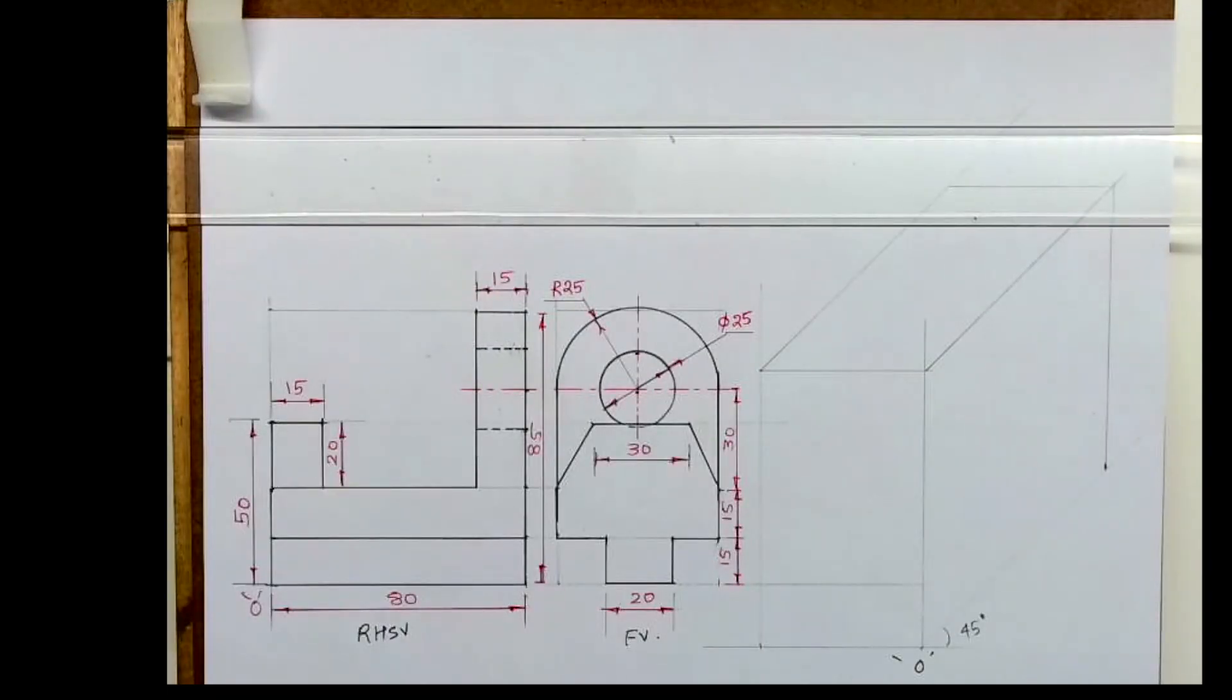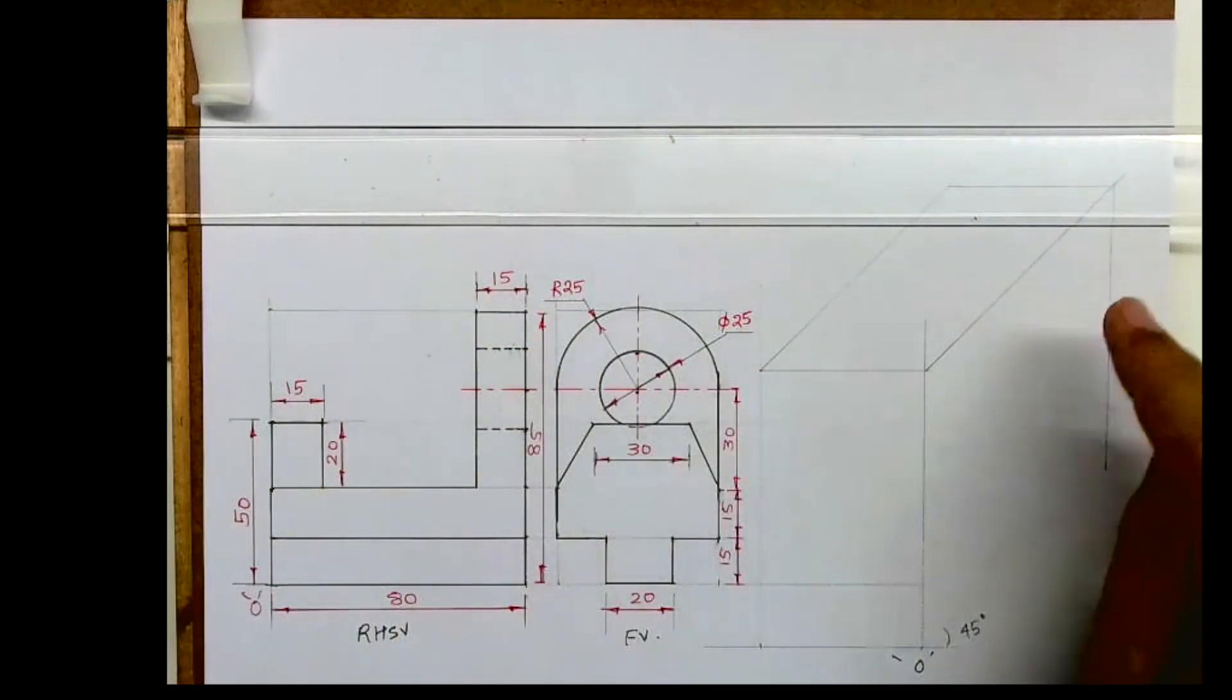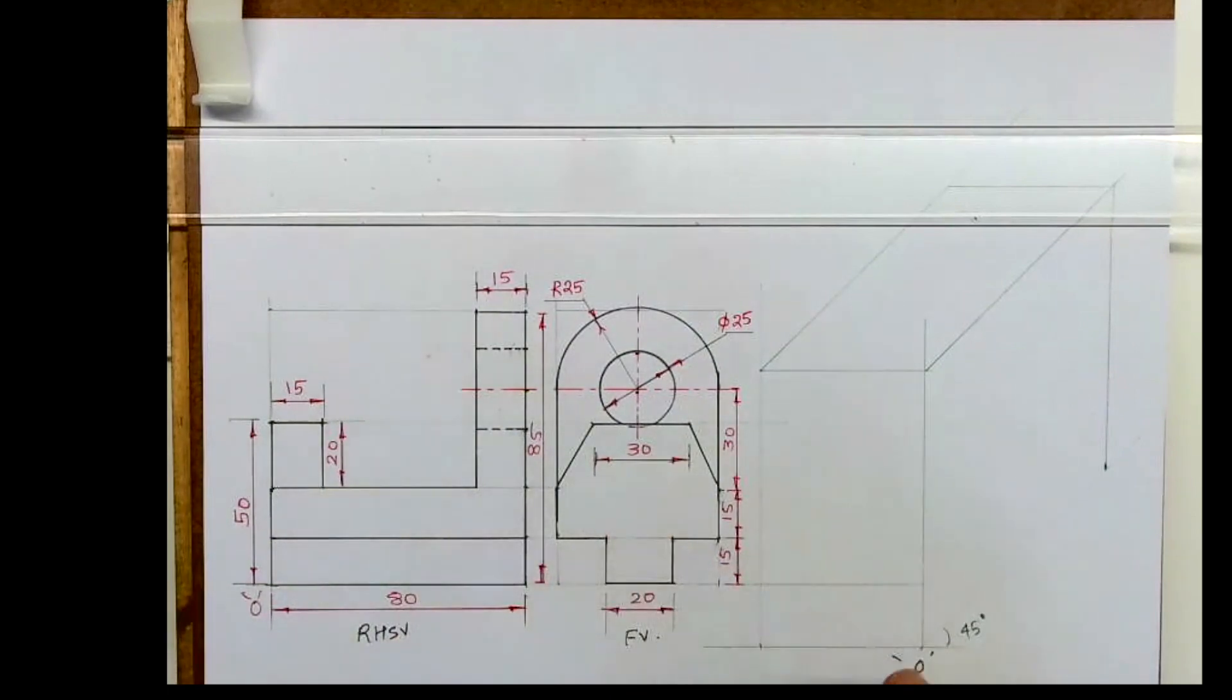Welcome to technical drawing. Today we'll see this sum in oblique. It is a technical drawing application paper 2023 sum. If you see this, they have given you front view and right inside view. This 80 is 50, origin is over here, so 45 will go on right inside 80. This is 50, height is 85. First we will draw layout, after drawing layout we'll draw this part.